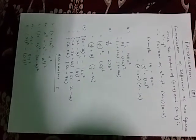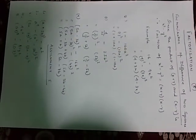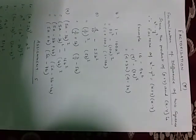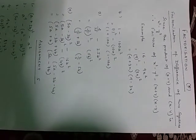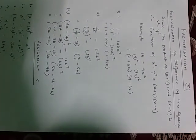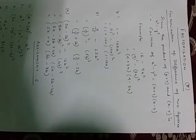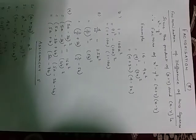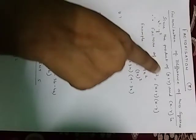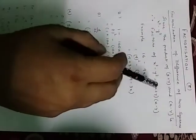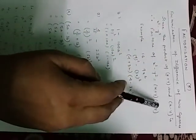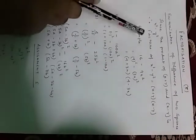Today we are going to do factorization by the difference of two squares. Since the product of x plus y and x minus y is x square minus y square, therefore factors of x square minus y square is equal to x plus y and x minus y. Let us see the example.